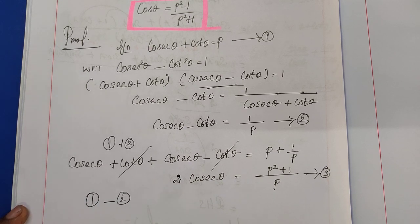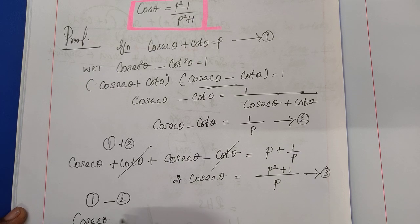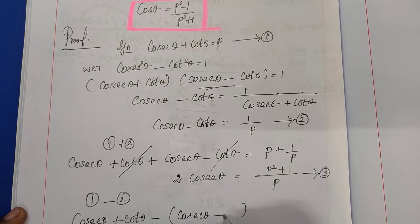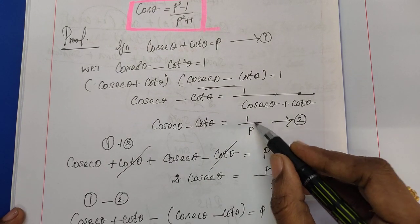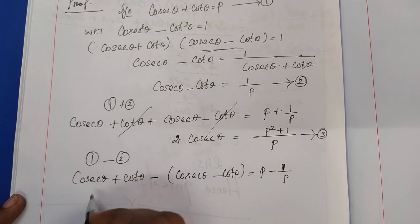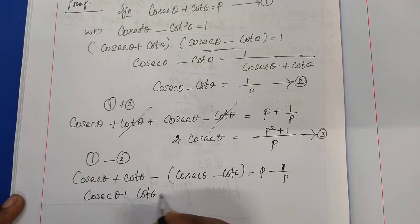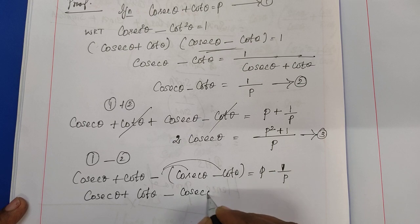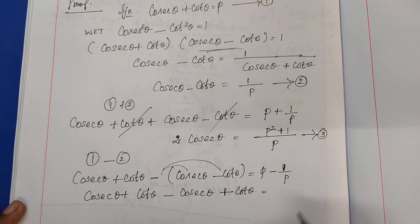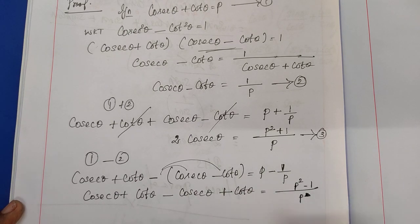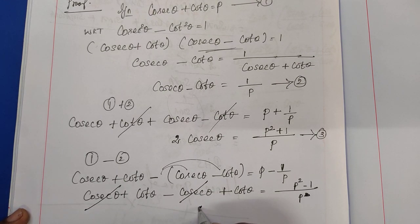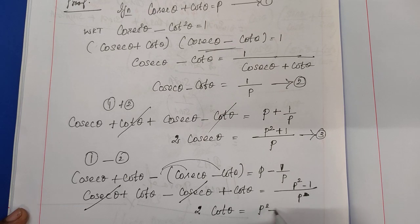Now calculating equation 1 minus equation 2. Write the first term as cosecant theta plus cot theta, and subtract cosecant theta minus cot theta. The right-hand side is p minus 1 by p. Expanding the subtraction, the cosecant terms cancel, giving 2 cot theta equals p squared minus 1 by p. This is equation number 4.